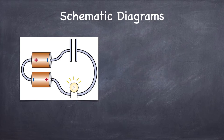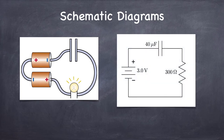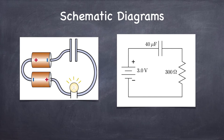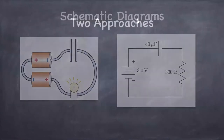Next, let's discuss schematic diagrams. Instead of drawing realistic pictures of circuits, we use simplified symbols. The battery becomes a series of alternating-length lines labeled plus and minus. A capacitor becomes two parallel lines separated by a gap, labeled with the capacitance value. The resistor becomes a zig-zag line labeled with the resistance value. A farad is the unit of capacitance — one coulomb per volt — and an ohm is the unit of resistance — one volt per amp.